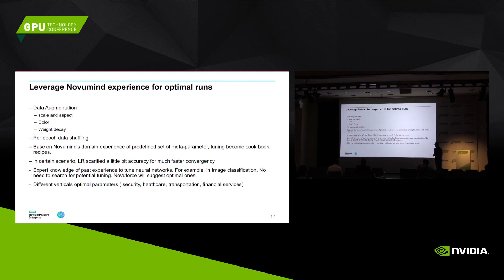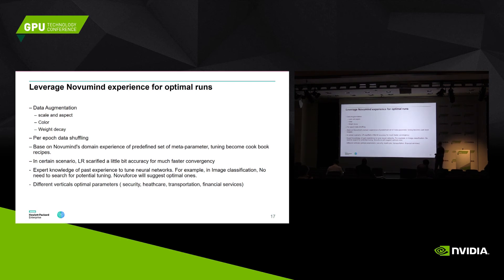When you start investigating deep learning you may face questions like: what parameters do I need to tune in my network, and how do I get the best accuracy with the optimal time? Based on NoviMind's experience, we already have this information — all these preset, tuned parameters targeting different verticals. This experience will help you be more efficient and get results more quickly.